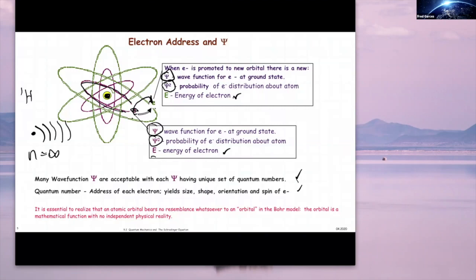It is essential to realize that atomic orbitals bear no resemblance whatsoever to orbitals in the Bohr model. The orbital is a mathematical function with no independent physical reality. That's probably why quantum mechanics can be very confusing — only those who can understand the very abstract really appreciate it. If you want to become a theoretical physicist or theoretical chemist, then you will appreciate this.